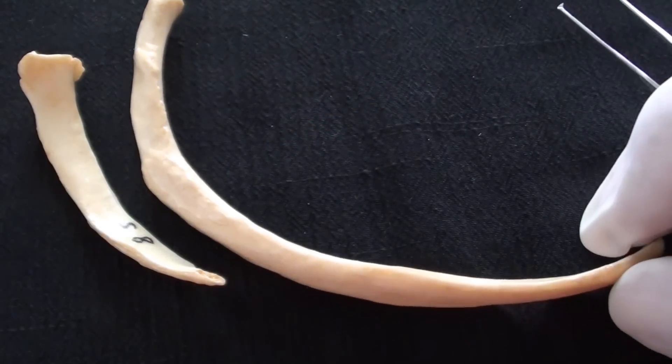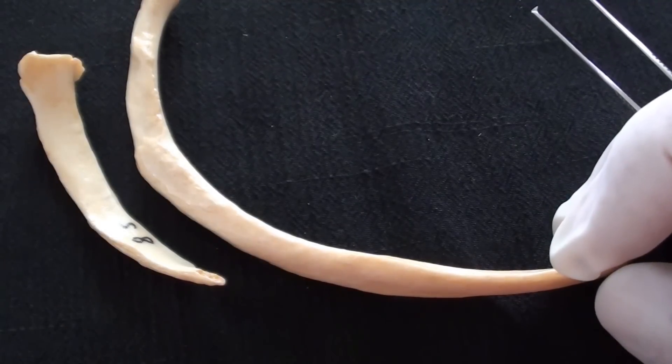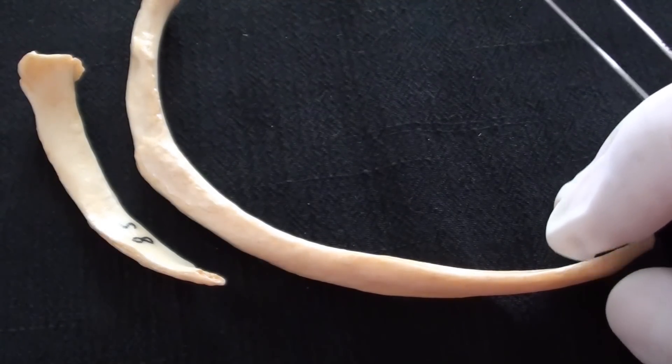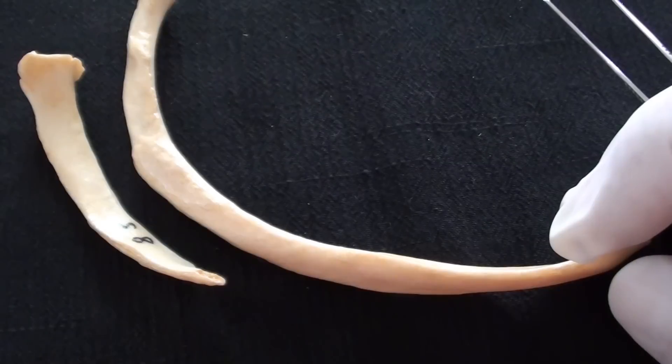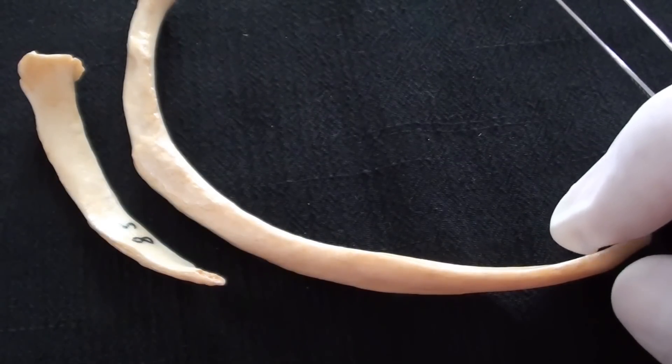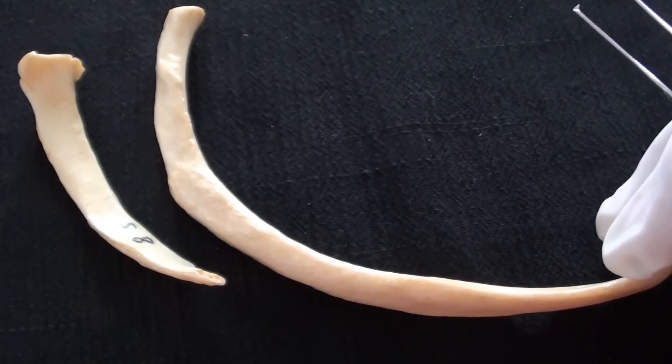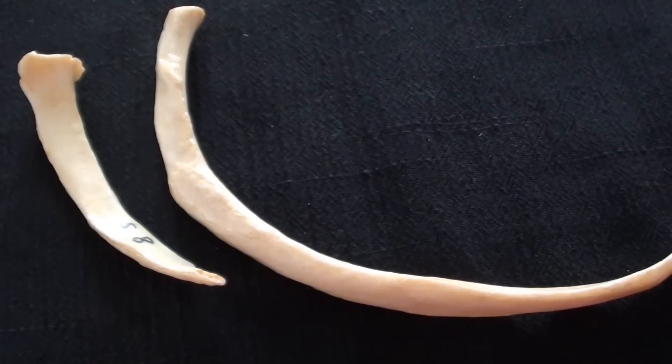Also quite interesting to observe that ribs 11 and 12 also do not have sulcus costae and vessels that pass inferior to rib number 11 and rib 12 are going to be protected by using the other methods.